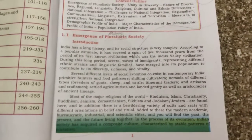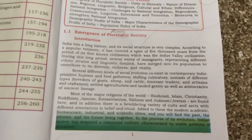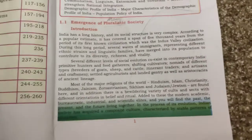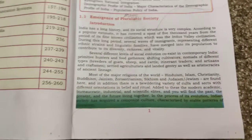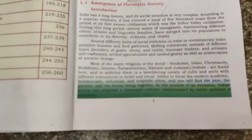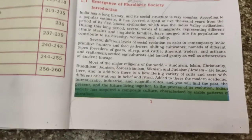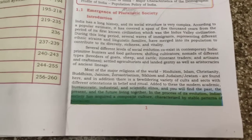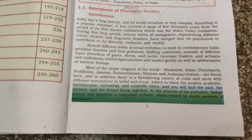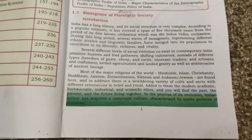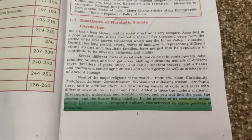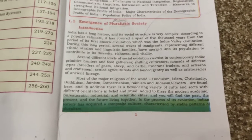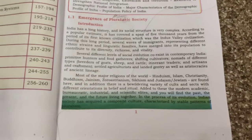Several different levels of social evolution coexist in contemporary India. Social evolution means the way people have changed according to time and the ages — for example, earlier there was no internet or technology as much, but now we can see the evolution happening. These include primitive hunters and food gatherers, shifting cultivators, and nomads of different types.